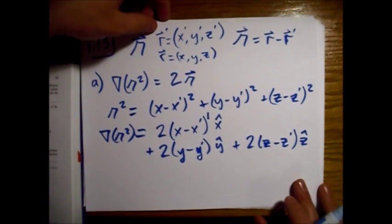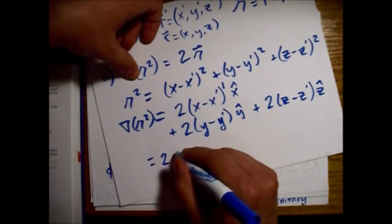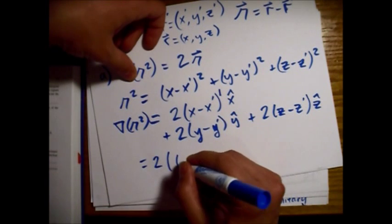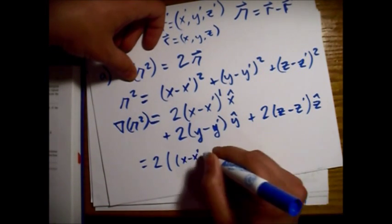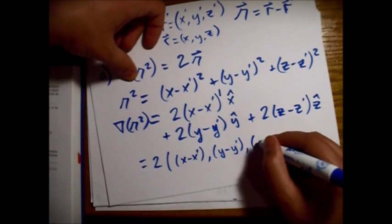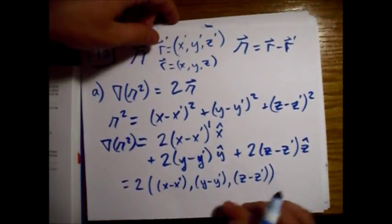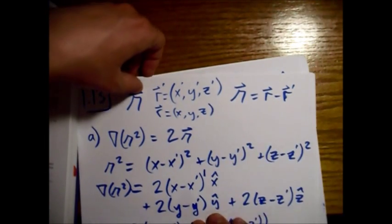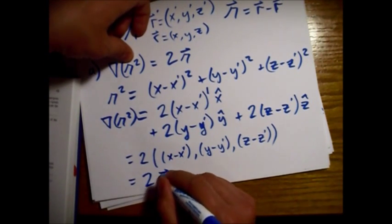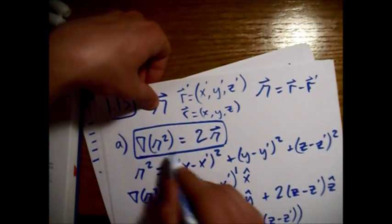We can factor out the 2, and what we have left is the components: (x minus x-prime), (y minus y-prime), and (z minus z-prime). This vector is just the r minus r-prime vector, which is the cursive r — the separation vector. And that is what we were asked to prove.